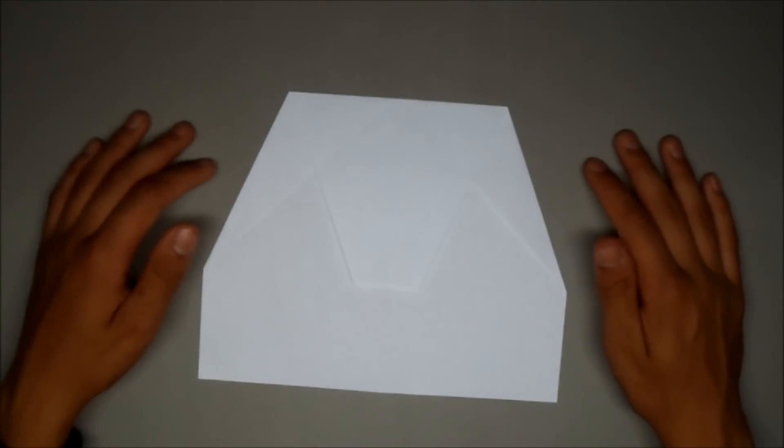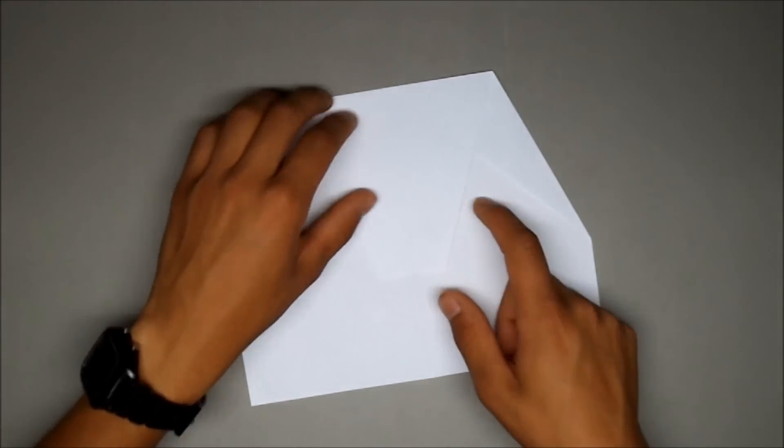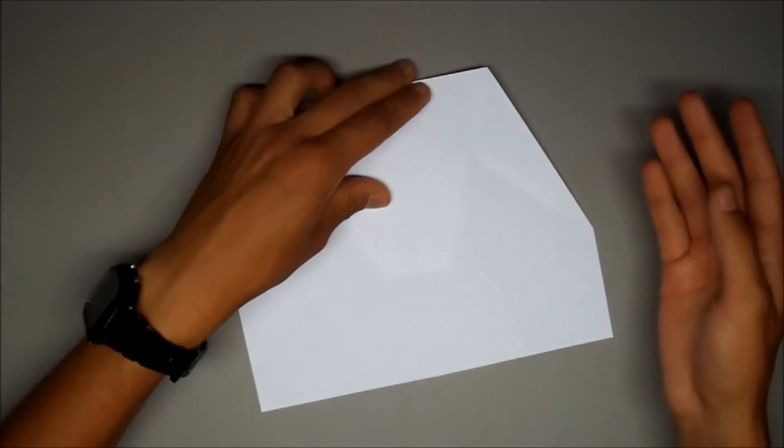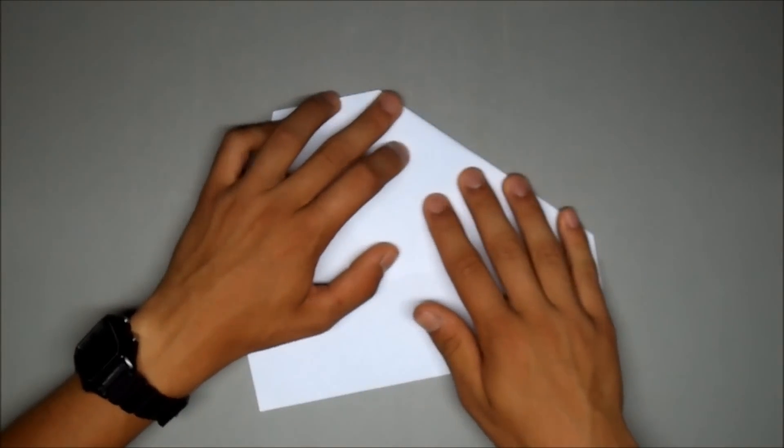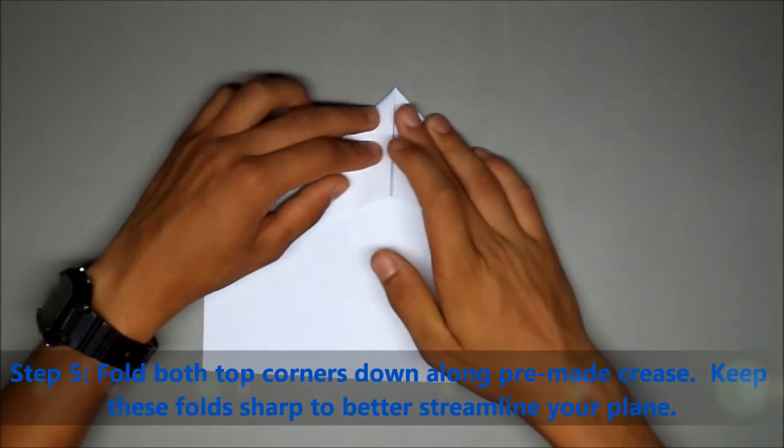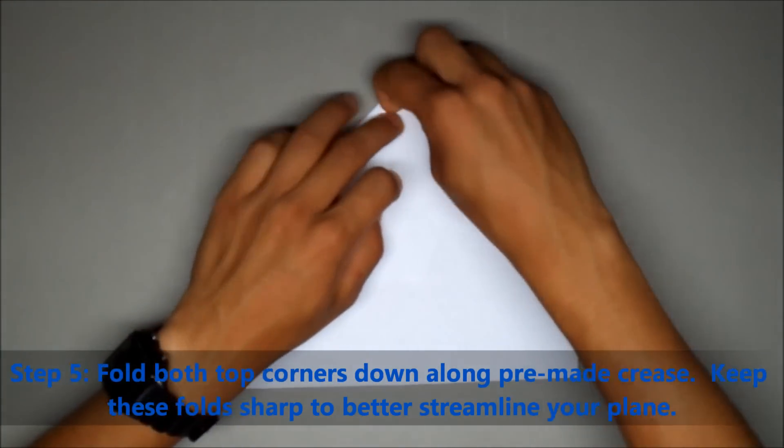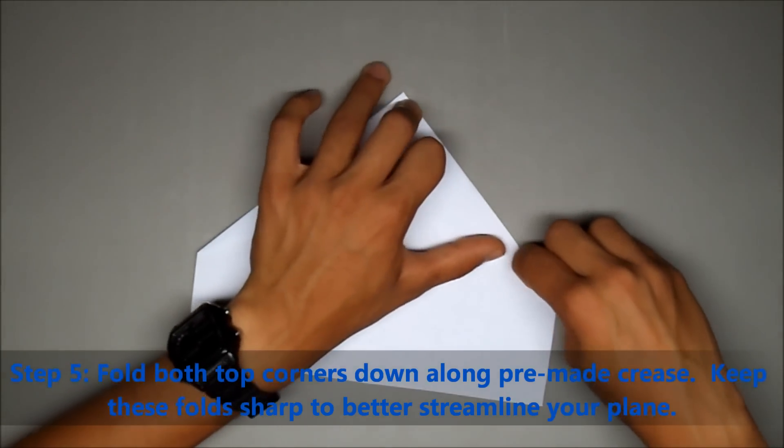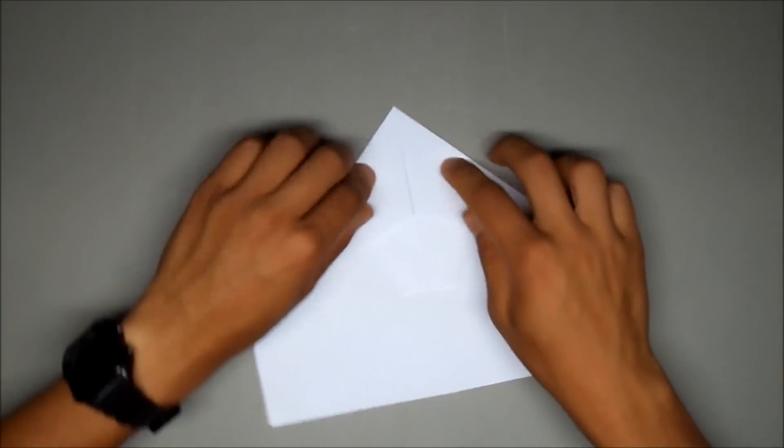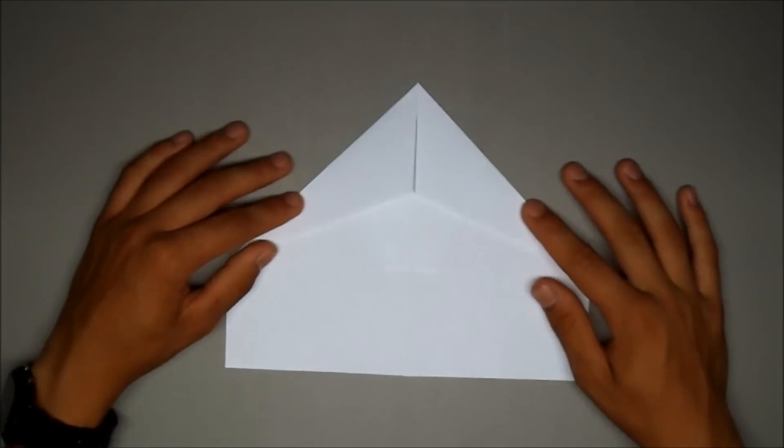Okay, so now it should look like this. Now I like this part of the plane, this next step, because you see that these creases just magically line up right here. And if they don't line up that's a problem, but if you don't succeed, try try again. So fold along that crease, those two creases that become one, and it should come together like this. Now here's very important to make sure the creases are strong and flat. Okay, so now it should look like this.